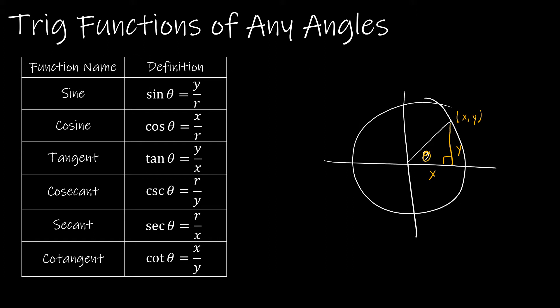All of that continues to work great when we start thinking about opposite over hypotenuse, which is r the radius, so y over r makes perfect sense. Cosine was adjacent over hypotenuse, so that's x over r, and so on.